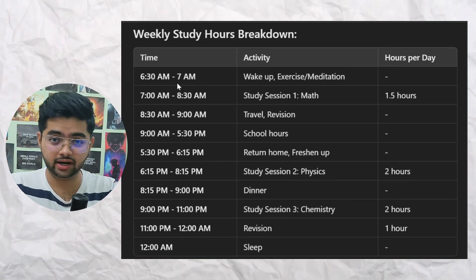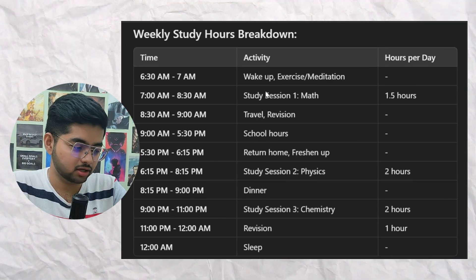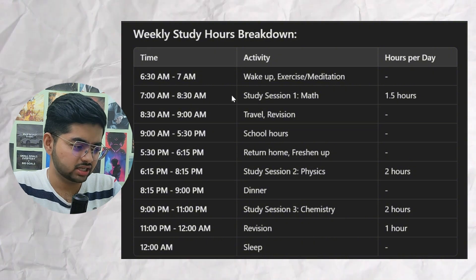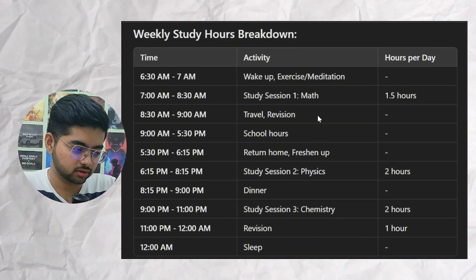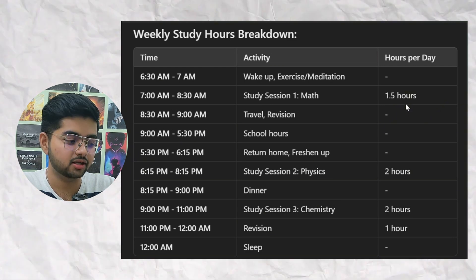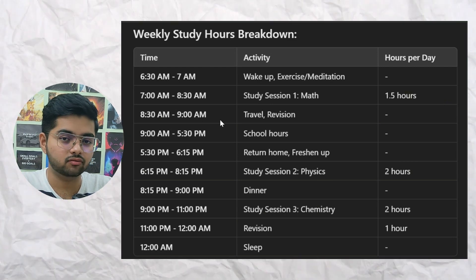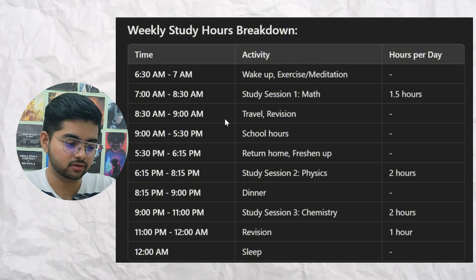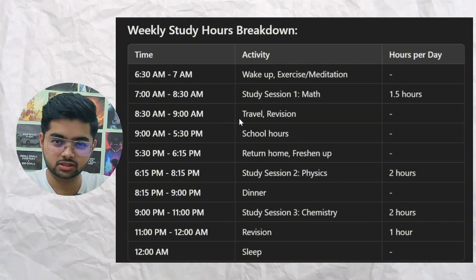For weekdays — Monday to Friday — your morning will start at 6:30 AM. Wake up, then from 6:30 to 7 you can meditate or exercise for half an hour. Then 7 to 8:30 is study session one — math — for one and a half hours. As school starts at 9 AM, from 8:30 to 9 — half an hour — use for traveling, and if possible try to revise while traveling.